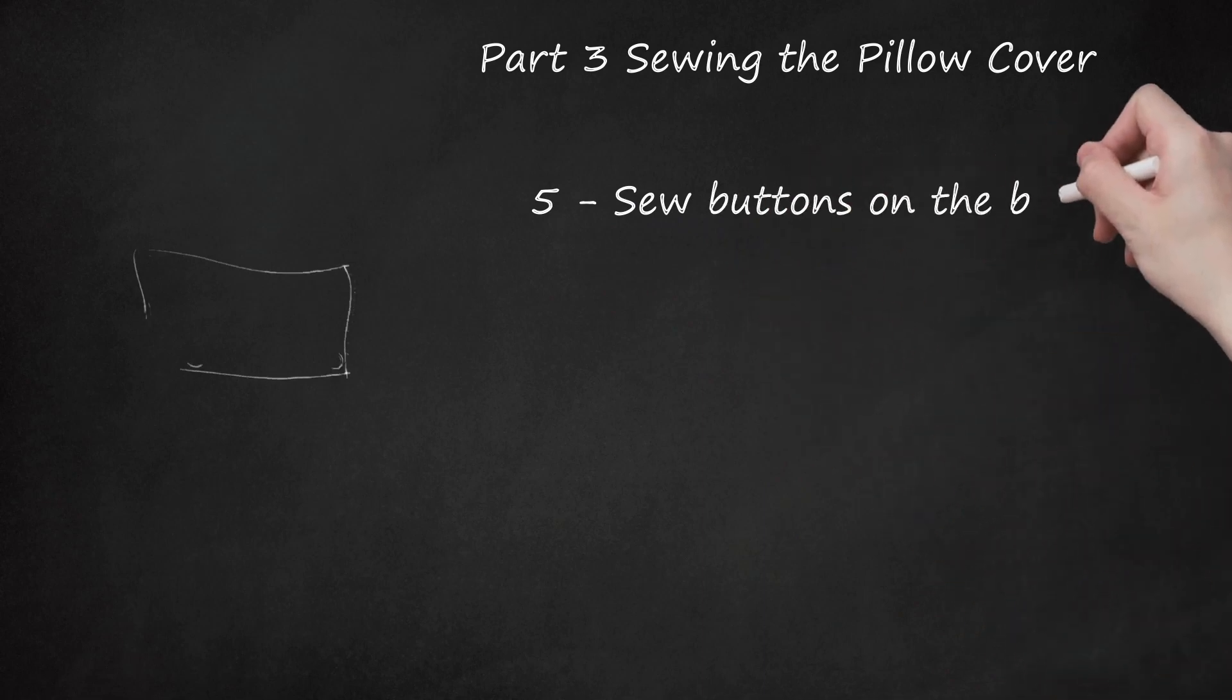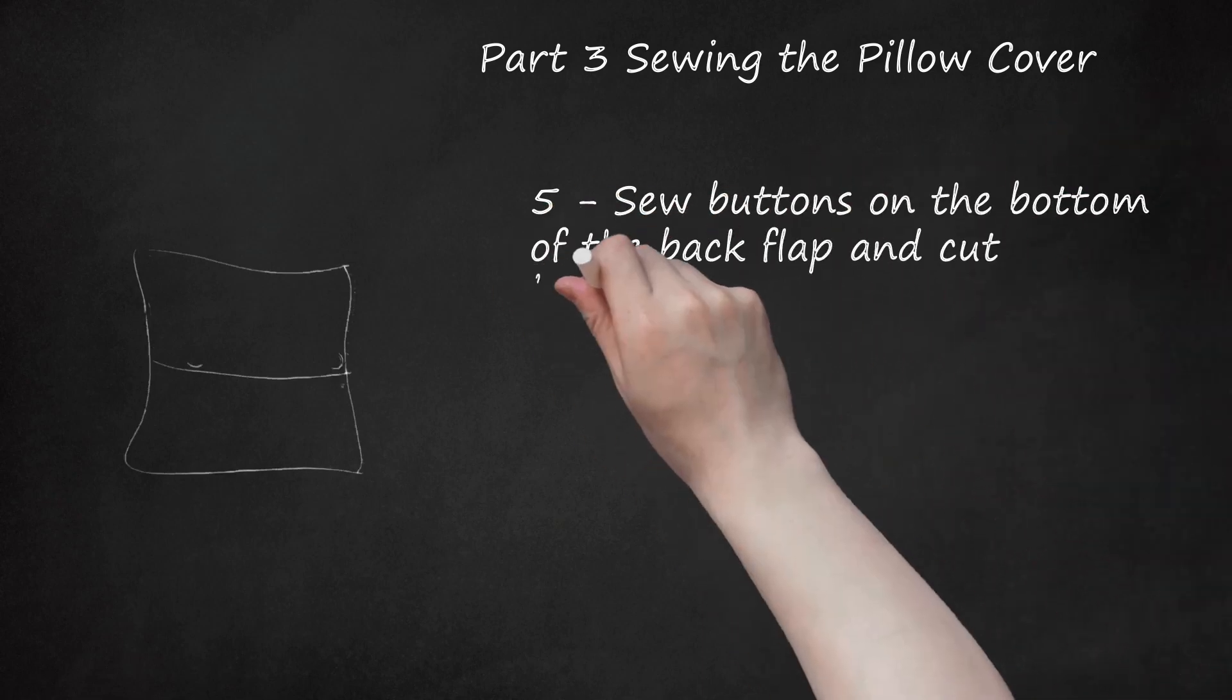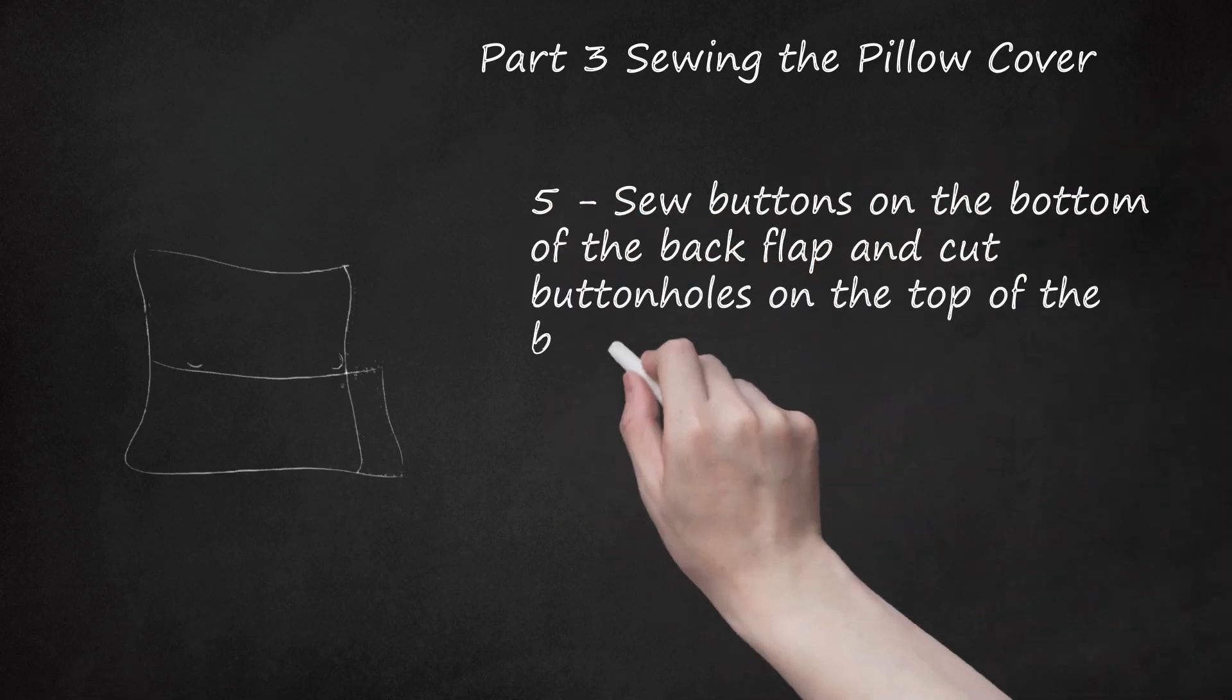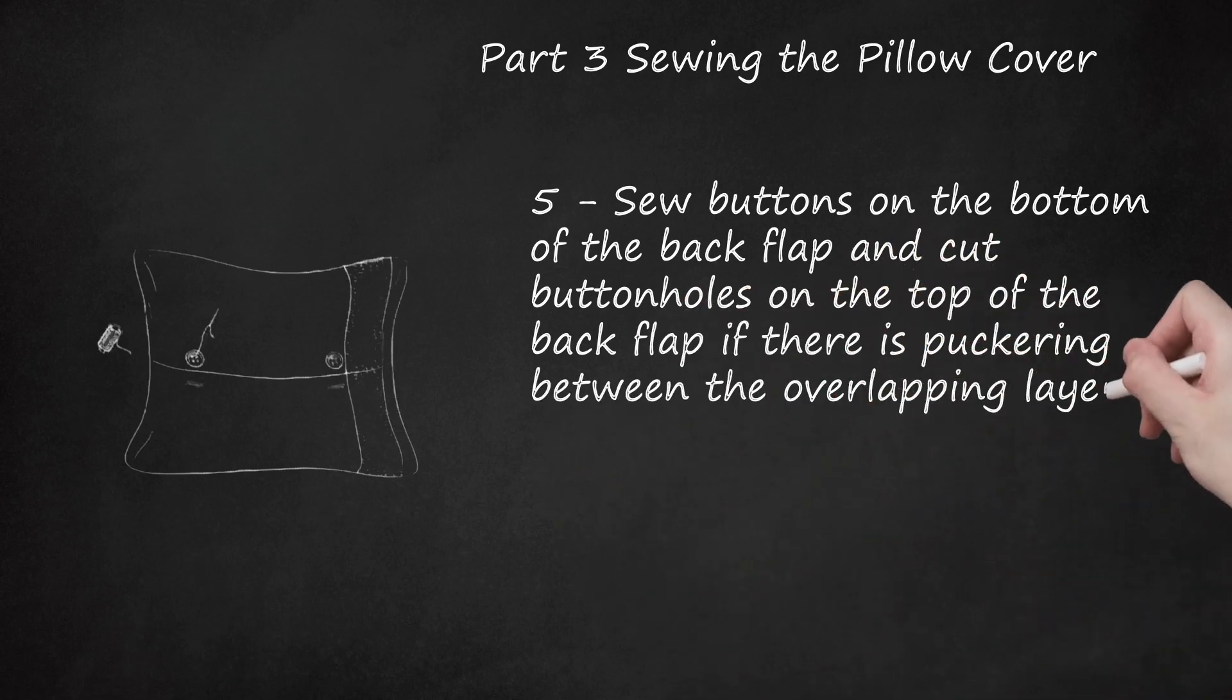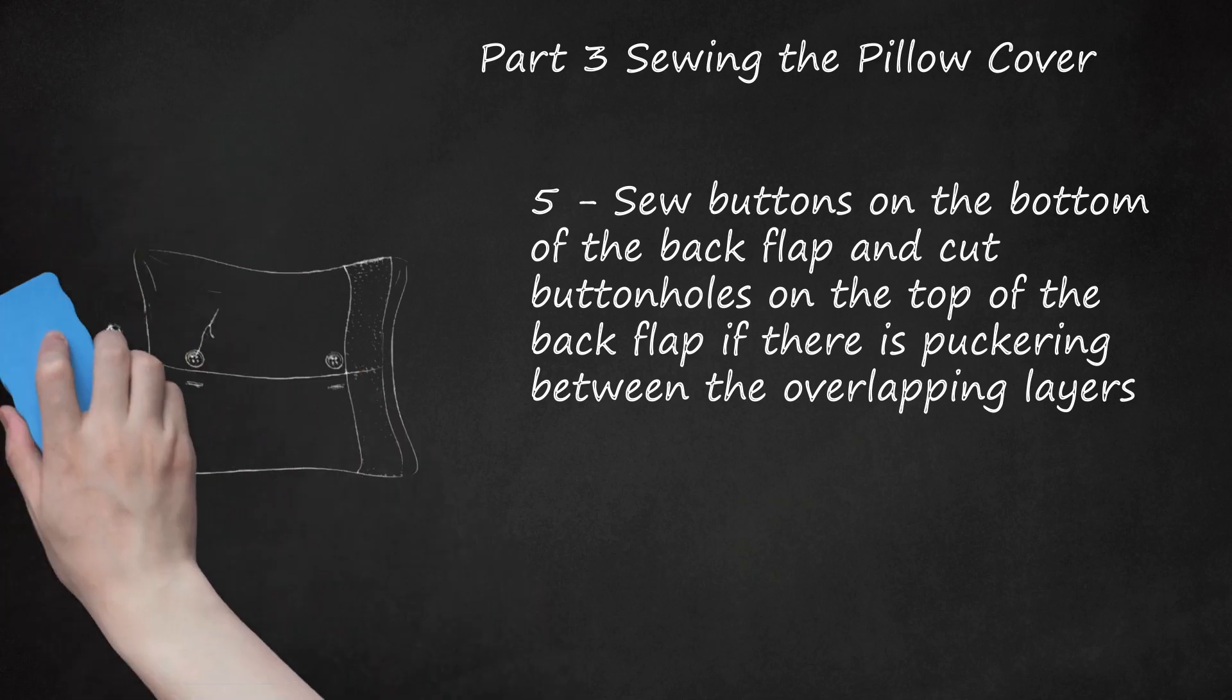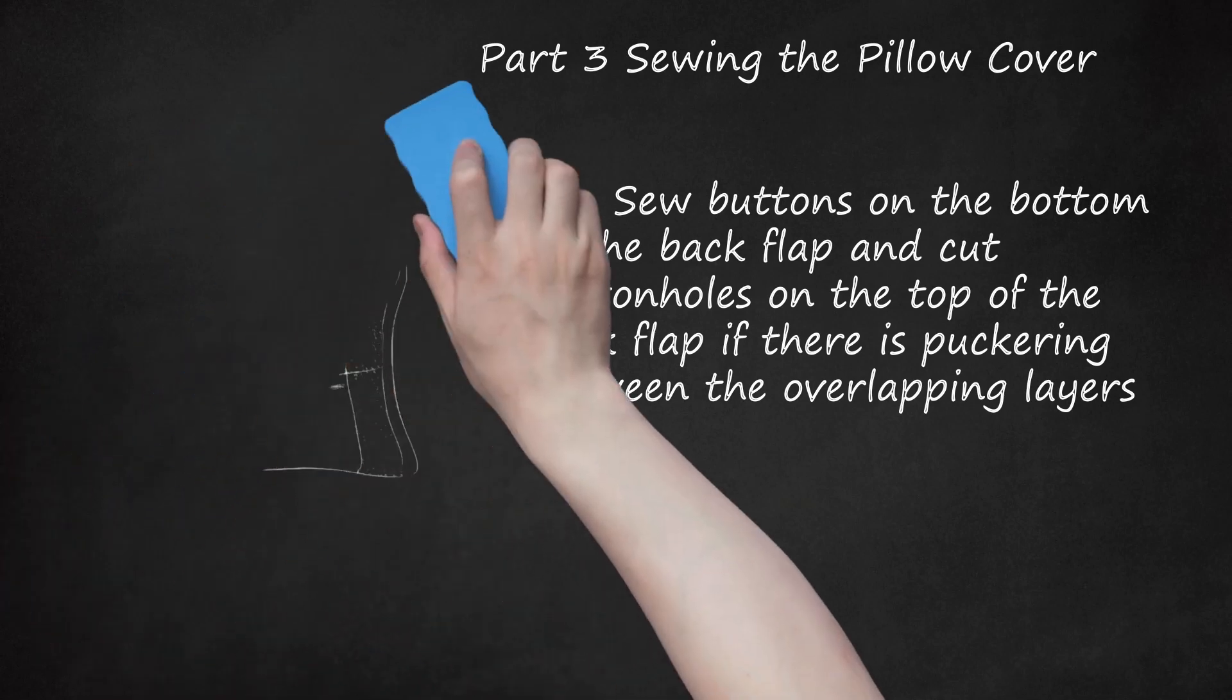Step 5: Sew buttons on the bottom of the back flap and cut buttonholes on the top of the back flap if there is puckering between the overlapping layers. Insert the buttons through the buttonholes to hold the flaps flush. Wash the pillow cover along with your normal towels when dirty.